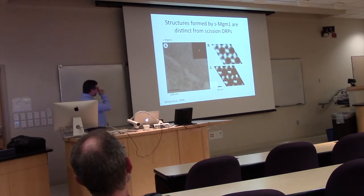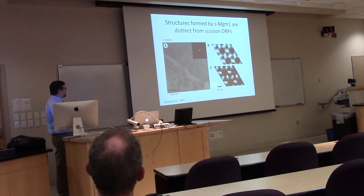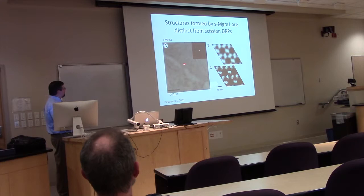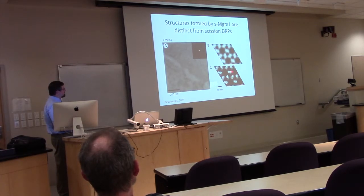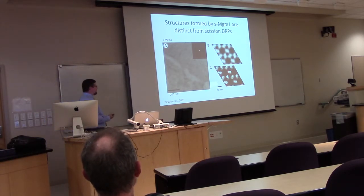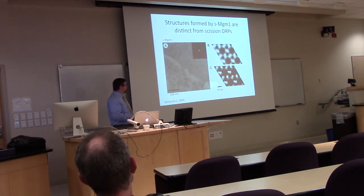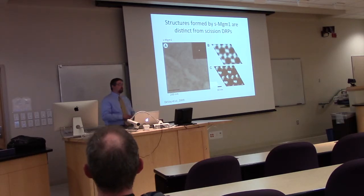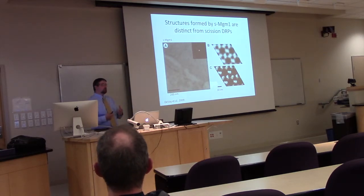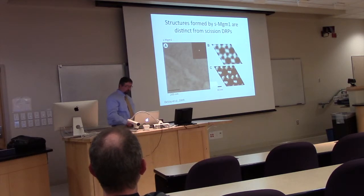Looking at what the short isoform looks like when it binds membranes, we find it forms a two-dimensional crystalline array of dimers — arrayed in either six-fold or three-fold symmetry. It's definitely not forming helical structures. We think this array is what interfaces with opposing inner membranes during the fusion reaction — this is an early stage of the process, we believe.